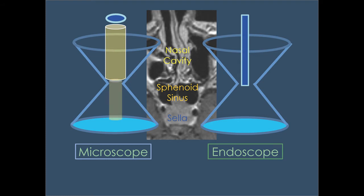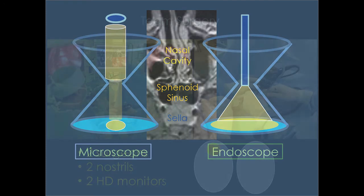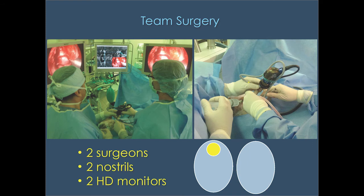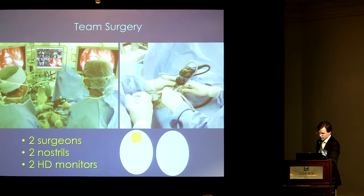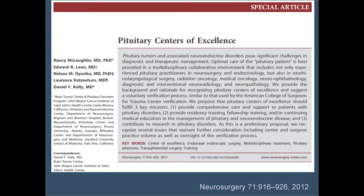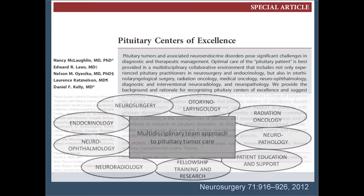The reason we switched to the endoscope is simply because we can see better. With the operating microscope sitting outside the nose, you get a focused beam of light through a speculum down to the sella — a very focused view but limited. With the endoscope brought into the nasal cavity and sphenoid sinus, you get a much more panoramic view. This requires a team approach: someone drives the endoscope while the surgeon operates, with two monitors and navigation.